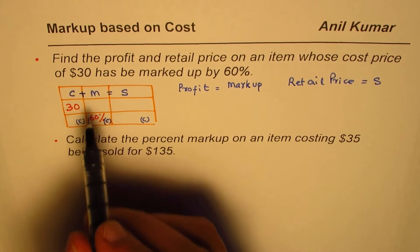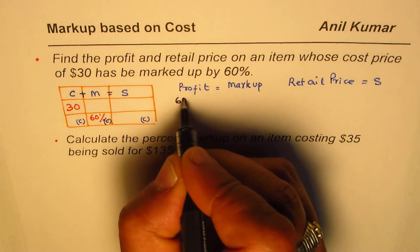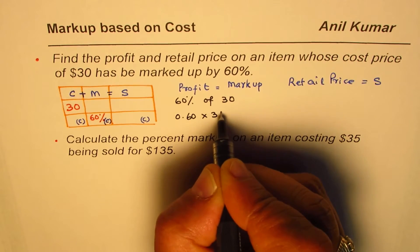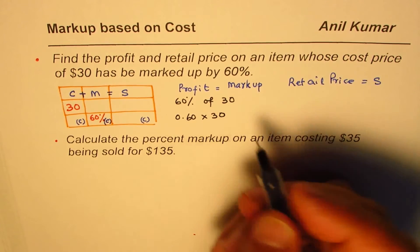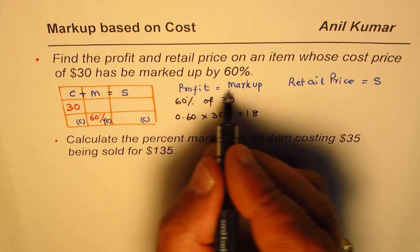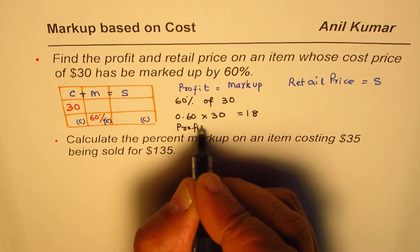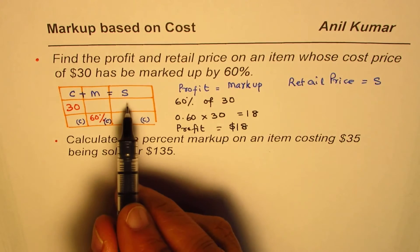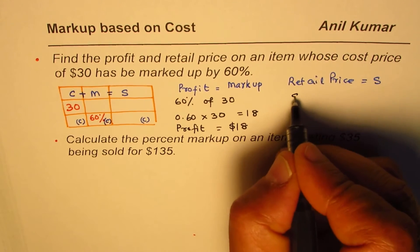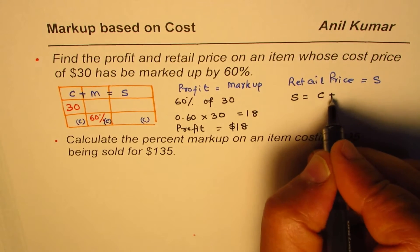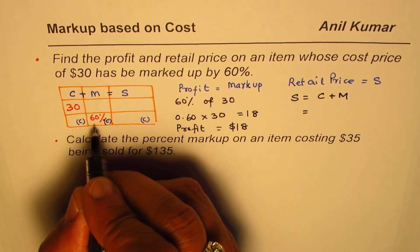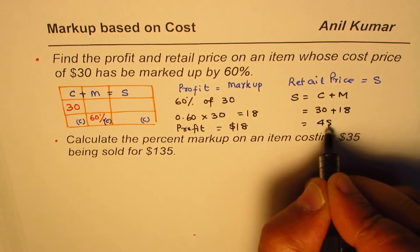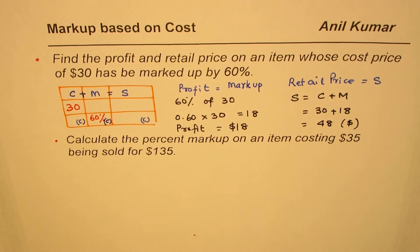Let's find the markup first: 60% of $30, or 0.60 times 30, which gives us $18. So the profit is $18. Now the retail price (sales) equals cost plus markup: $30 plus $18, which gives us $48.